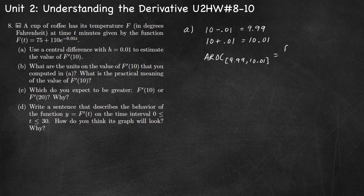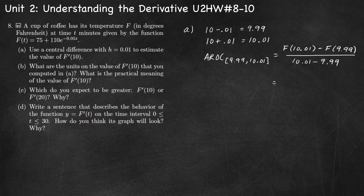So average rate of change on the interval 9.99 to 10.01. We'll use our average rate of change formula: f of 10.01 minus f of 9.99, over the change in our t values, 10.01 minus 9.99. Going to the calculator and computing that value, I'm getting negative 3.33592. So that's the average rate of change on the interval from 9.99 to 10.01, which estimates the instantaneous rate of change at t equals 10.